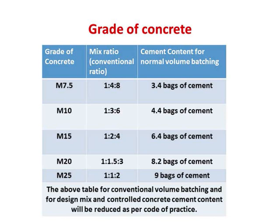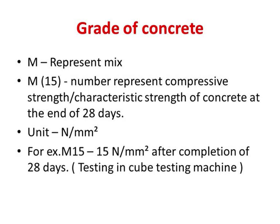Different grades of concrete are covered: M7.5, M10, M15, M20, M25. The conventional ratio is also given — M15 is 1:2:4, M10 is 1:3:6. The cement content for normal volume batching is given as 3.4, 4.4, 6.4, 8.29 bags. We used M10 with 4.4 bags in the rate analysis. M represents mix and the number represents the compressive strength of concrete at the end of 28 days in N/mm². M15 means 15 N/mm² after 28 days of testing.